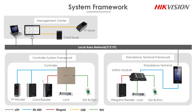Our controller is an IP-based controller, so it connects to the network, and we have software to centrally manage the controller. All permissions are downloaded from the software through the network to the controller, and the controller saves all the permissions. Once a card is presented at a card reader, the card number is uploaded to the controller, which checks its database to verify authorization. If authorized, the controller talks to the lock and opens the door.